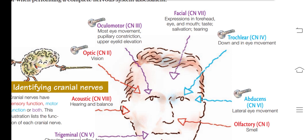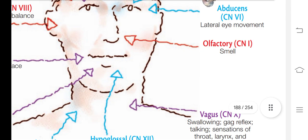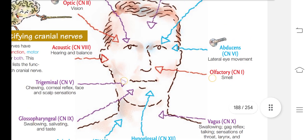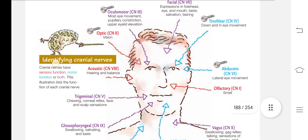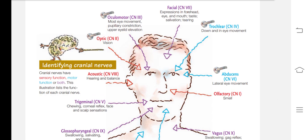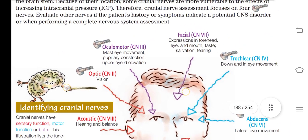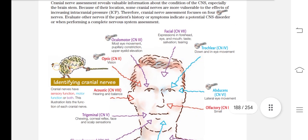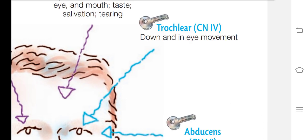Cranial nerve 1 is olfactory — it is responsible for smell. Cranial nerve 2 is optic — it is responsible for vision. Cranial nerve 3 is oculomotor, which controls most eye movement, pupillary constriction, and upper eyelid elevation. Cranial nerve 4 is trochlear, which controls eye movement downward and inward.